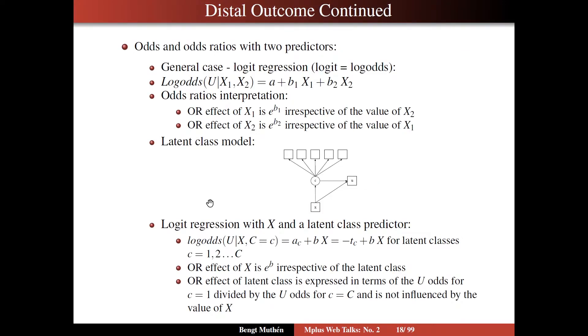On slide 18, we're going to look at odds and odds ratios with two predictors. The general case, we're going to work from logit regression. Logit is the same as log odds. The log odds for U is one way of writing the logit model. You just focus on the logit, which is a linear expression in the two X's.